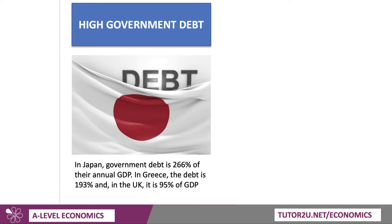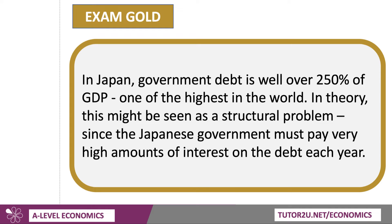It's gone up by about 10% over the last few years. Obviously, the pandemic caused a fall in GDP and a huge rise in government borrowing — it's about 95% of GDP, certainly well above where it was 20 years ago. And Japan has one of the highest government debts in the world. In theory, this might be seen as a structural economic problem, because the Japanese government must pay lots of interest on the debt each year.